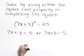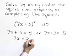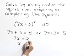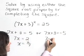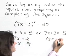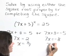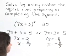Now solve each linear piece. So 7x is equal to 2, or x is equal to 2 sevenths. 7x is equal to a negative 8, or x is equal to a negative 8 sevenths.